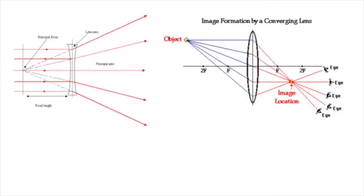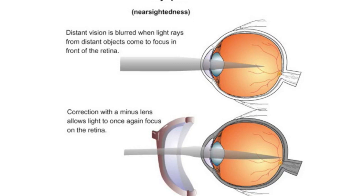Now you might be thinking, what do these lenses have to do with eyesight? Well, as these lenses have certain optical properties, they can be used to treat vision problems. Two main vision problems are myopia and hyperopia. Myopia is nearsightedness and hyperopia is farsightedness. A person with myopia can see objects nearby but has difficulty with objects far away. This occurs when the cornea and lens converge too strongly, or the distance between the retina and the lens is too great. The incoming light rays converge in front of the retina, producing a blurry image.